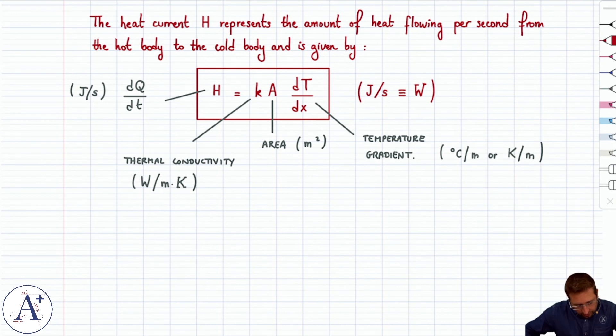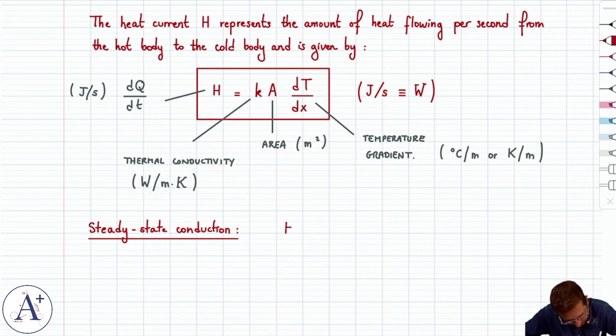So let's just write this in the case of steady state conduction, which is the most common. Steady state conduction will give you a constant heat current H equal to K times A. That doesn't change. And then dT dx is actually delta T divided by the length L of the connecting rod.